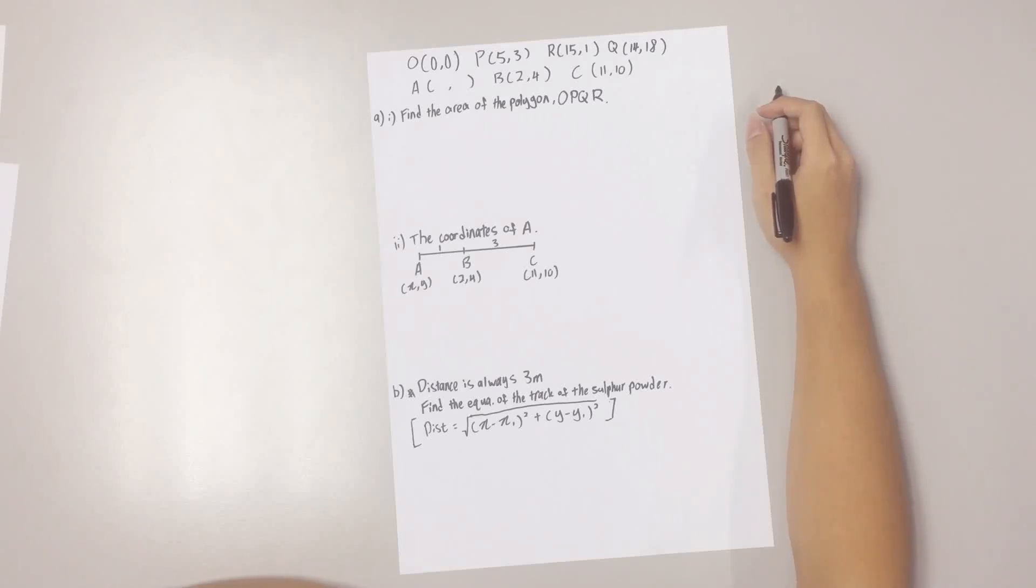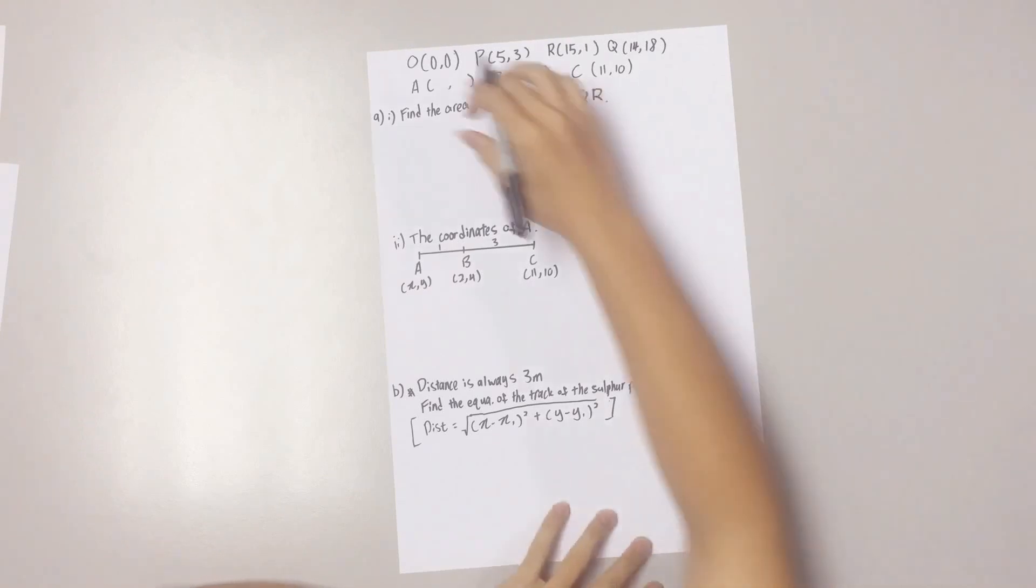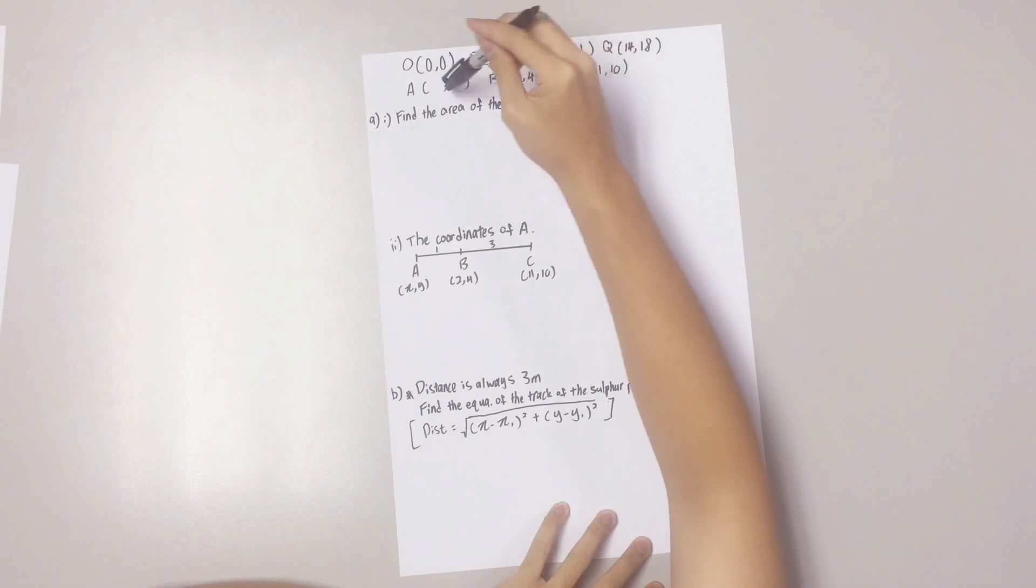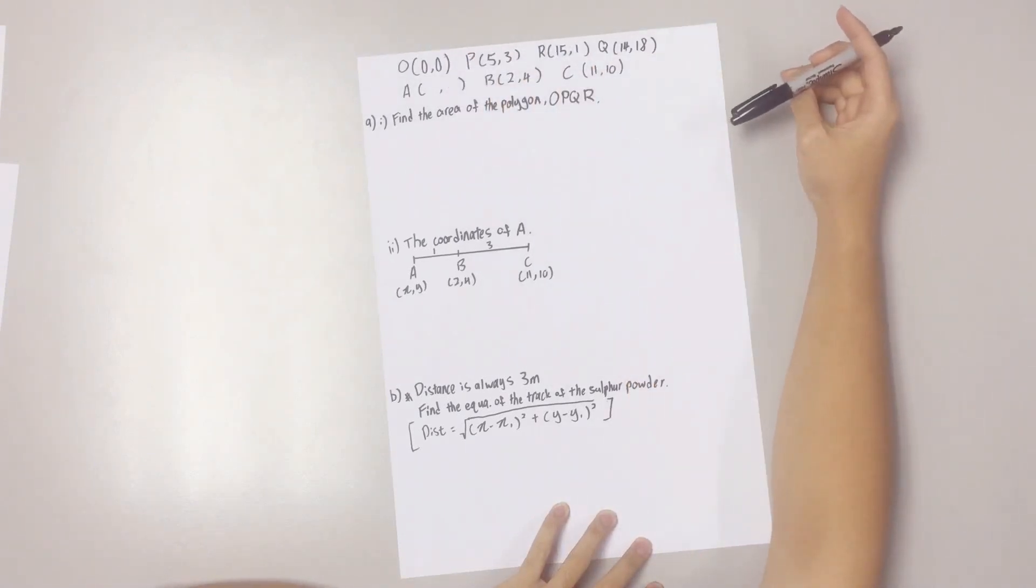For this video, let's look at the third question of SPM Math Paper 2, 2015. These are the coordinates given on the question paper. As you can see, we left the A coordinate blank because we have to find it later.